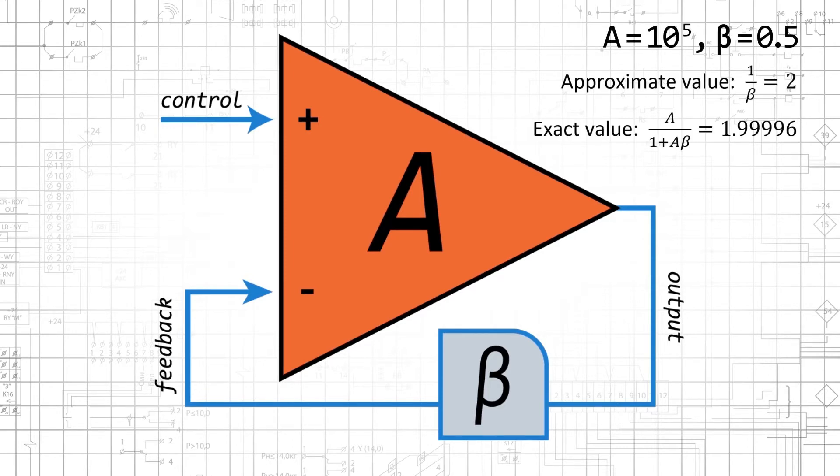For example, if A equals 10 to the fifth, and beta equals 0.5, the approximate closed-loop gain is 2, and the exact value is 1.99996.